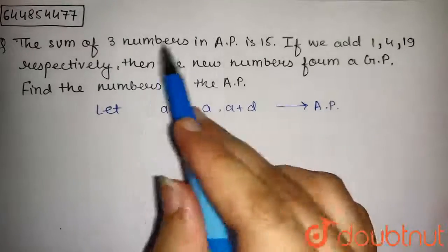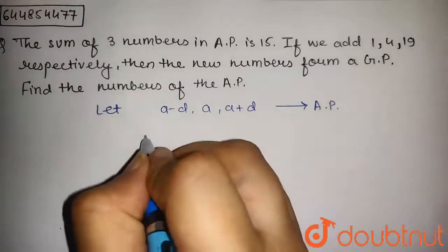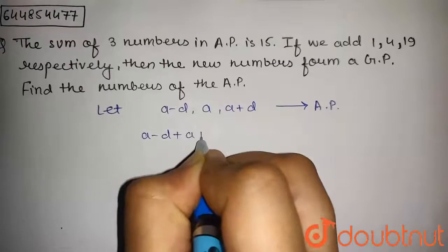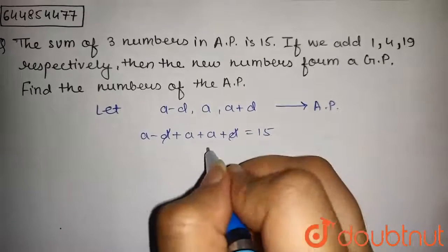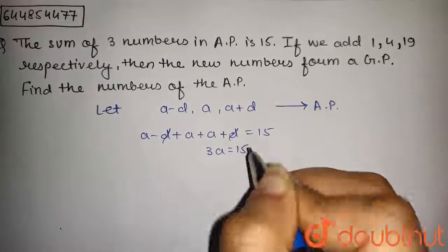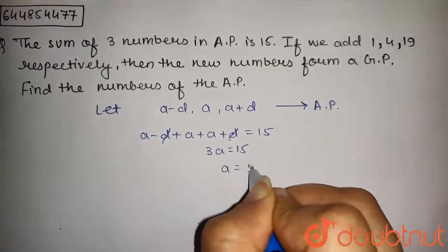We have given that sum of these is 15, so A-D plus A plus A plus D equals 15. This D and D will get cancelled. We get 3A equals 15, from this A equals 5.